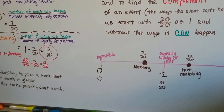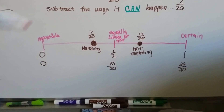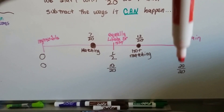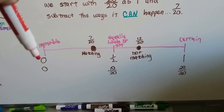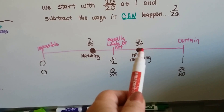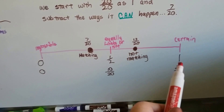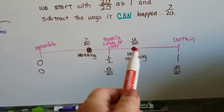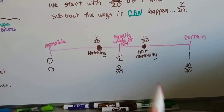On our number line, 20 over 20 as a 1 would mean it's certain to match, and 0 would be impossible to match. Here are his matching chances — 7 out of 20 — and his not matching chances — 13 out of 20. Since 10 over 20 is the midpoint, he's a little bit farther towards being certain that it's not going to match.